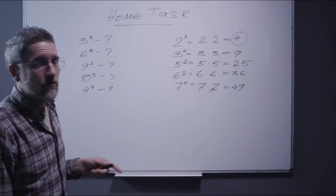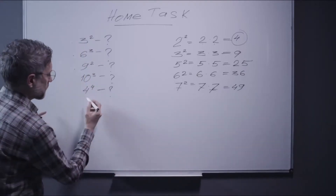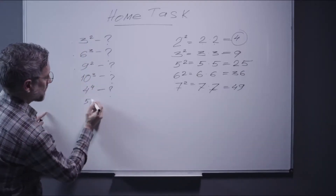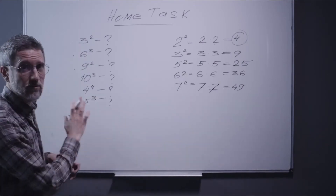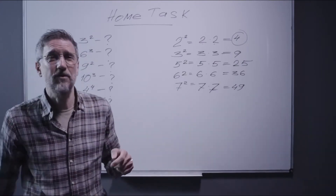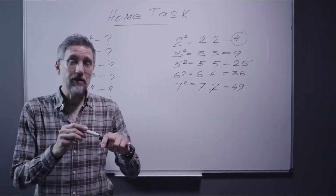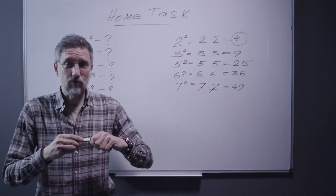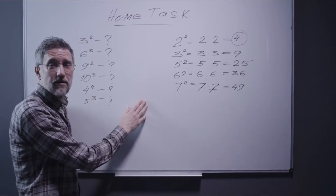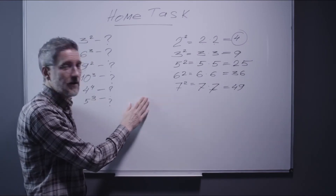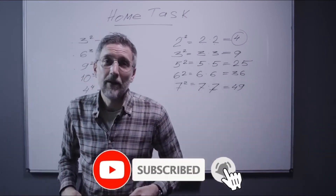Diameter Formula. We all know that diameter is a part of a circle. Let us understand a few terms before we learn the formula for the diameter of a circle. The radius, R, is the length of a line segment from the center of the circle to an end point on the circle. Circumference, C, refers to the enclosed boundary of the circle. It is also known as the perimeter of the circle.